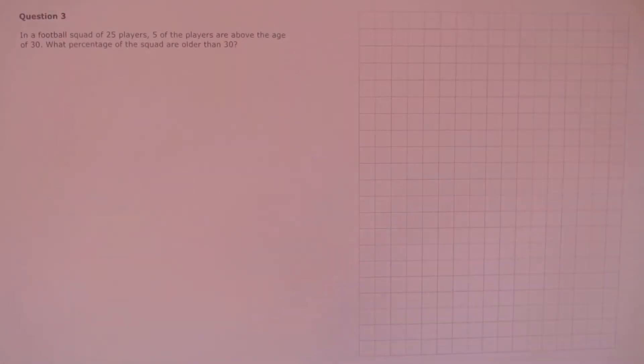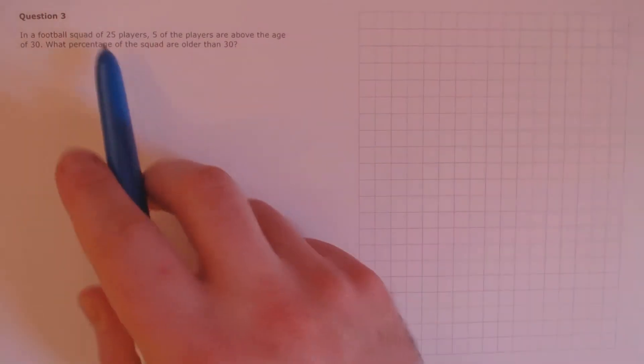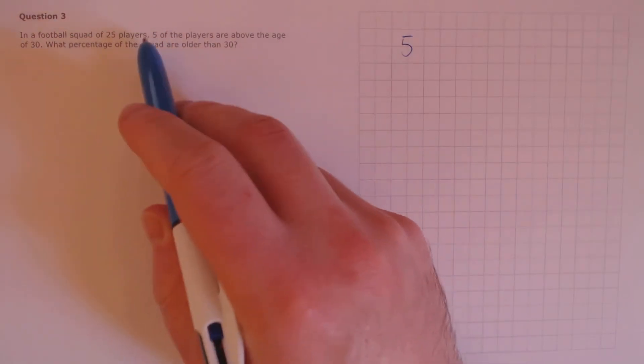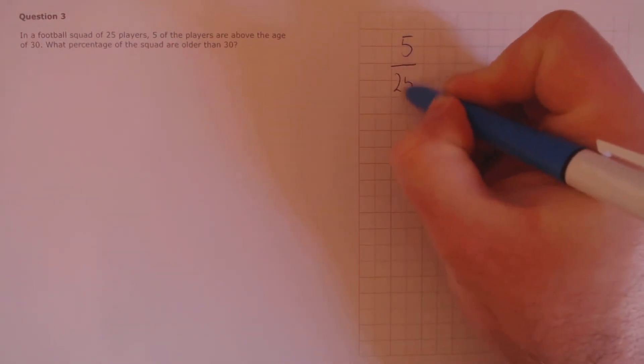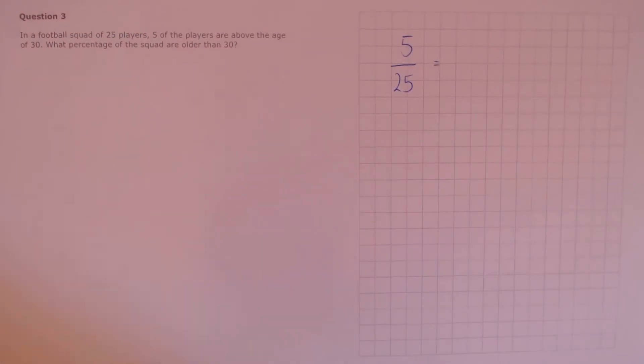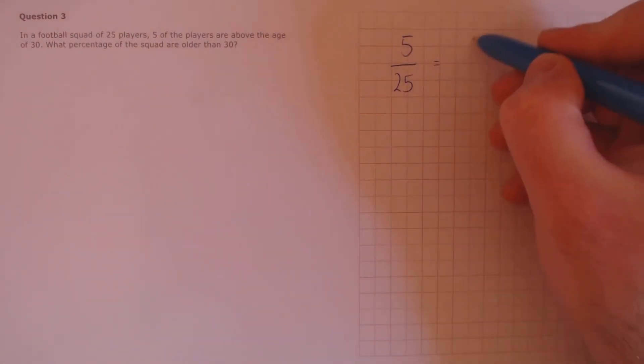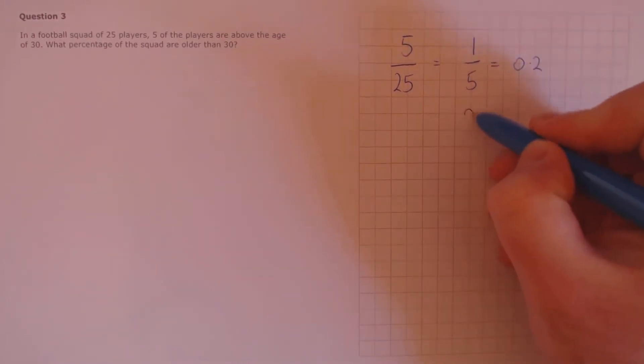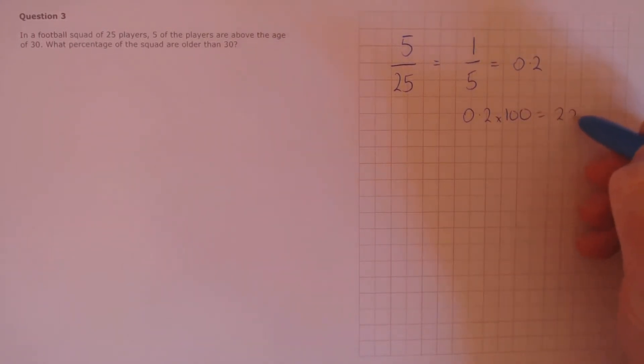Question 3. In a football squad of 25 players, 5 of the players are above the age of 30. What percentage of the squad are older than 30? We know that 5 of the players are above the age of 30, that's 5 out of 25. First, let's simplify that, so we get 1 over 5. And we want to convert this to a percentage. 1 over 5 is 0.2, so we multiply it by 100 to get 20%.